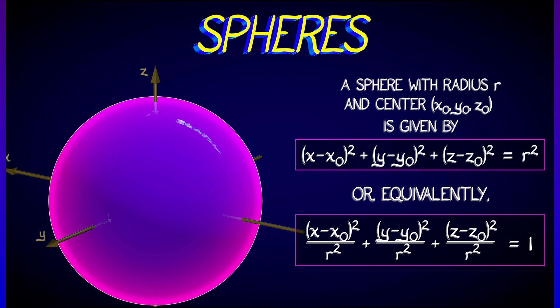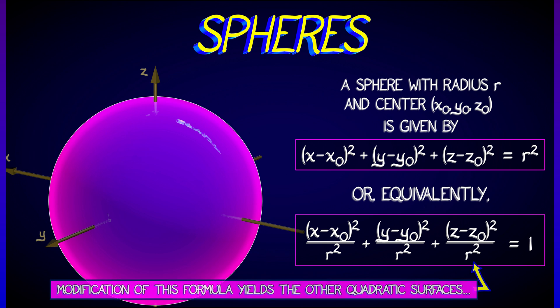What we're often going to do is divide both sides of that equation by r², and the reason for that is modifying this form of the equation yields the other quadratic surfaces that we're going to look at.